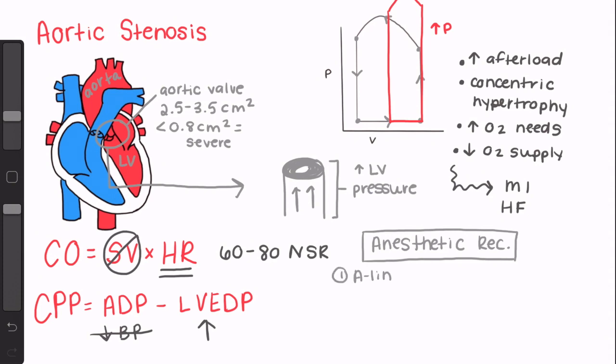here are some recommendations to help keep your aortic stenosis patient safe while they're under anesthesia. First, consider using an arterial line to monitor your blood pressure. With severe stenosis, using an A-line is especially important because these patients don't tolerate even short episodes of hypotension. Remember what we talked about how coronary perfusion pressure is equal to aortic diastolic pressure minus left ventricular end diastolic pressure,